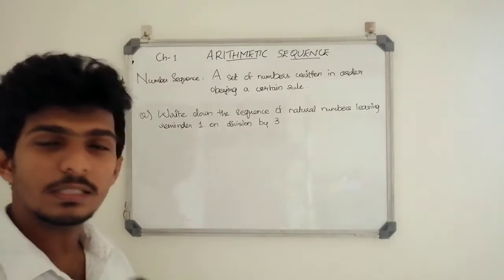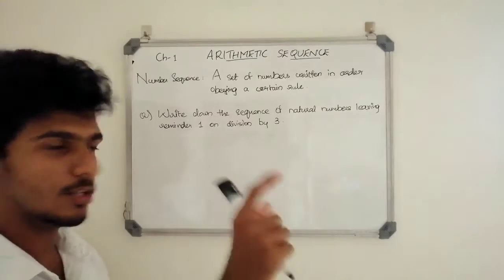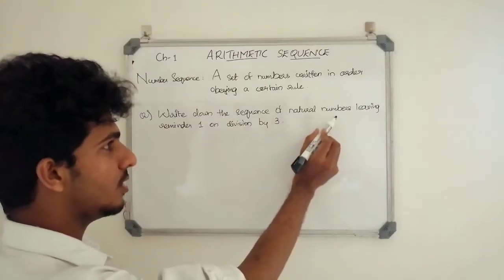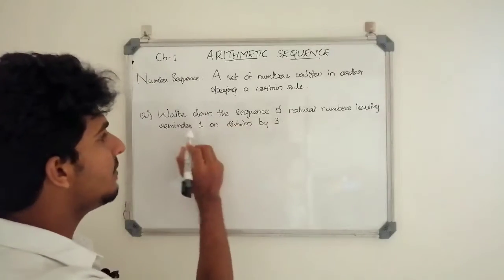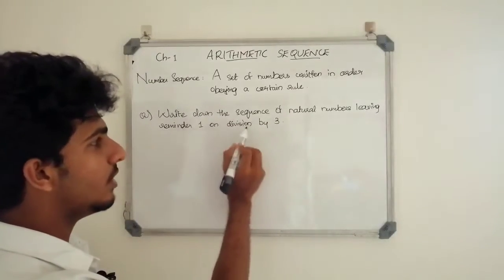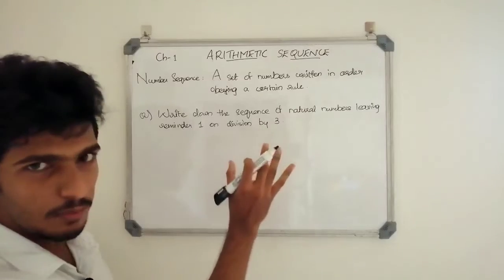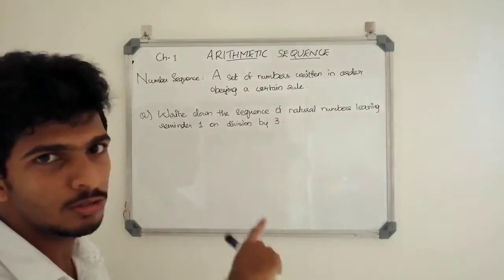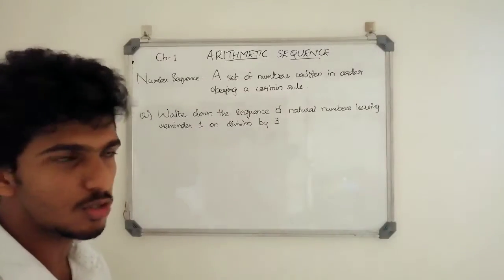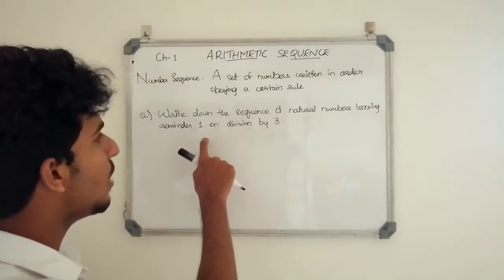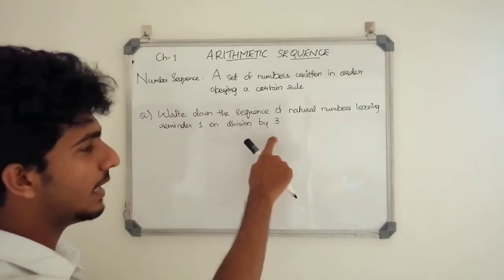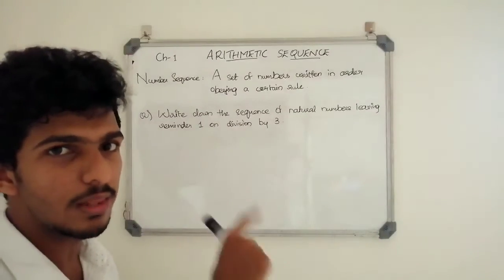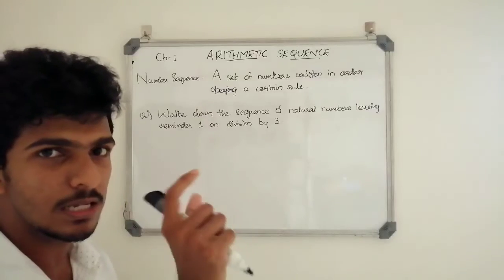Now we have a question: write down the sequence of natural numbers leaving remainder 1 on division by 3. Natural numbers are 1, 2, 3, and so on. We need to find natural numbers that leave remainder 1 when divided by 3.